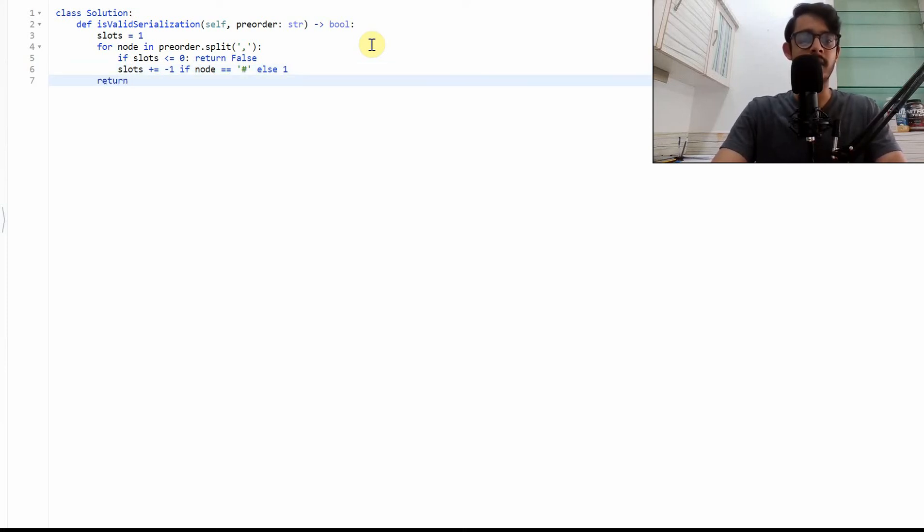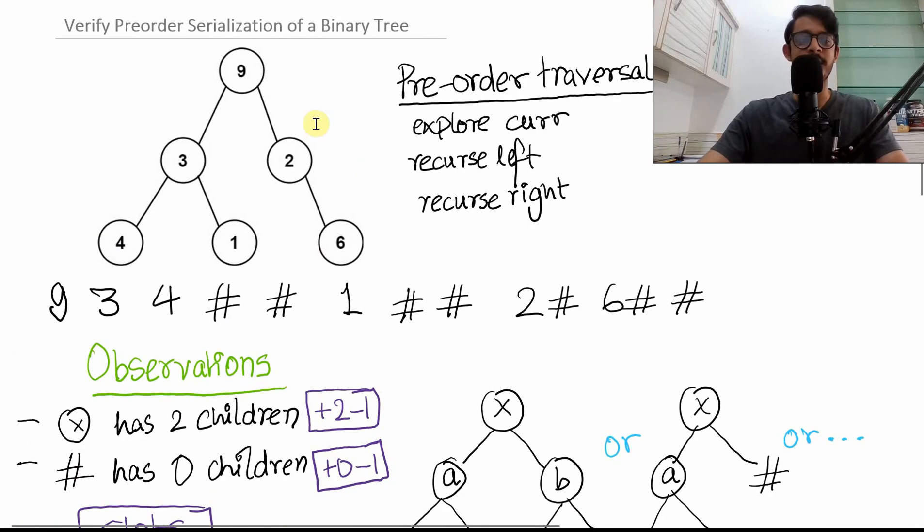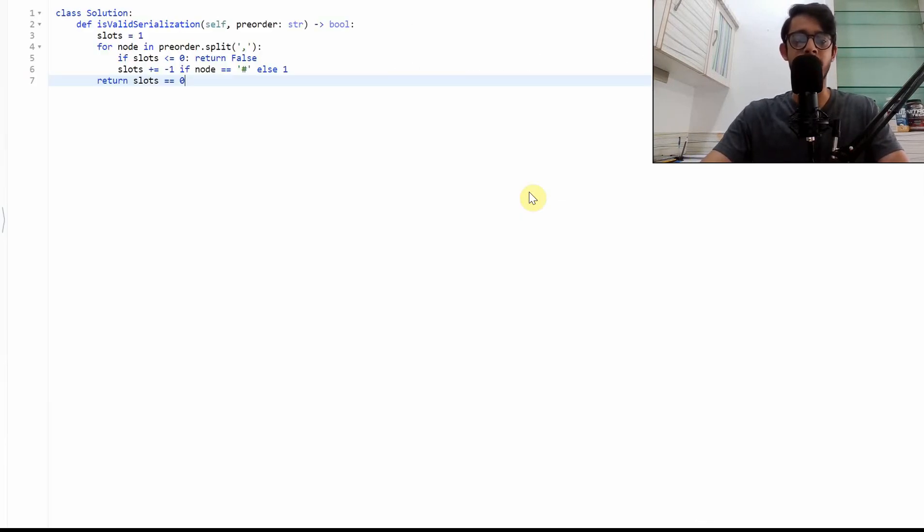At the end, we'll return and say that slots equals to zero. Basically have you consumed everything or not? And that is it. That is the solution to the problem, verify preorder serialization of a binary tree. We were able to exploit the fact that this is a preorder traversal. And then we just had to do accounting.